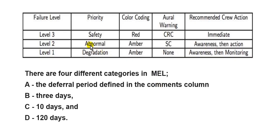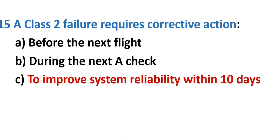There are also different levels — three levels — and separately there are categories: Category A, B, C, and D. The correct answer to the first question is: to improve system reliability within 10 days. That is the correct answer.